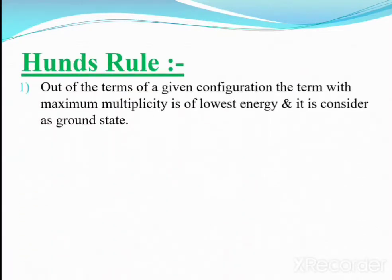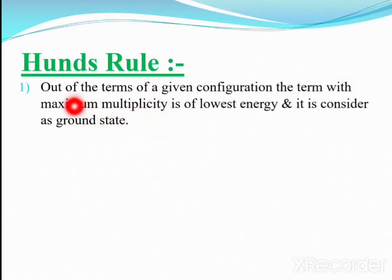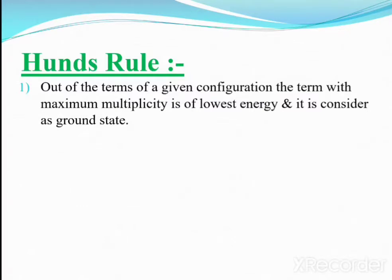Rule number one: out of the terms of a given configuration, the term with maximum multiplicity is of lowest energy and is considered as the ground state. The meaning is that the higher the value of the spin multiplicity — that is, 2S+1 — the higher the value of 2S+1, the lower the energy of that term.